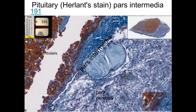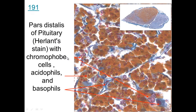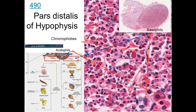This is the pars nervosa, the pars intermedia coming through here, and the pars distalis — this is an artifactual space, but these are the cells of the pars distalis. Looking more closely you can see chromophobes that do not take up stain, as well as acidophils which are red-staining and basophils that are blue-staining. The basophils produce hormones including ACTH, TSH, FSH, and LH, while the acidophils produce prolactin and growth hormone.